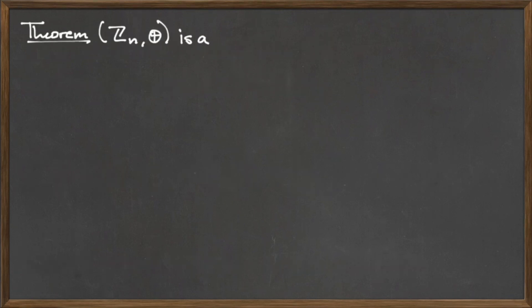Here we will prove that Z mod n under the operation ⊕ is a commutative, or abelian, group.